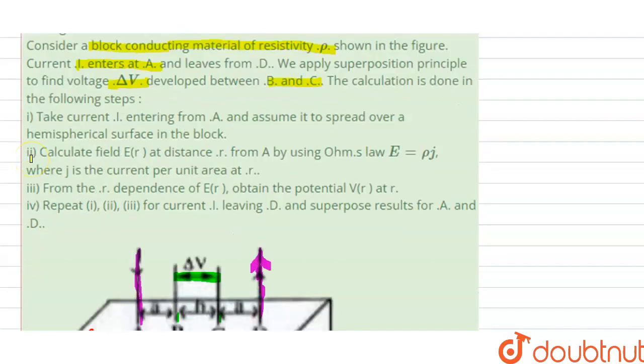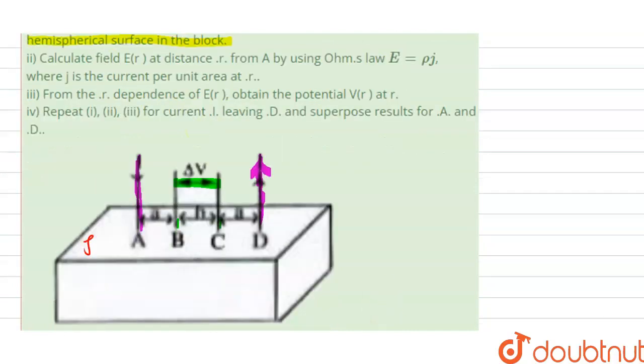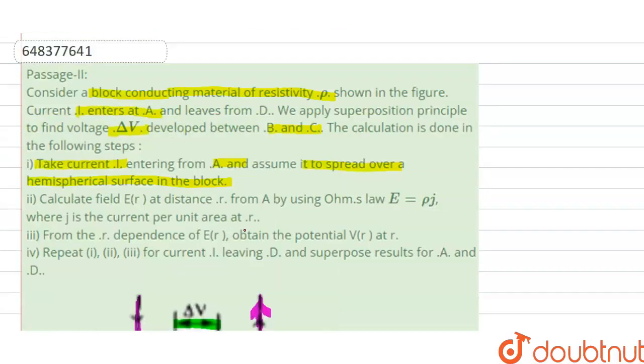So this process first step is saying: take current I entering from A and assume it to spread over a hemispherical surface in the block. So let us assume here our current is entering and it is spreading in the shape of a hemispherical bowl inside the block, right? In this shape, in 3D case.